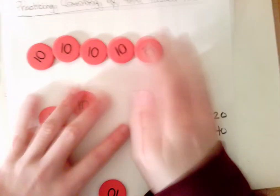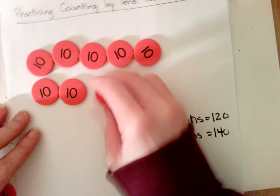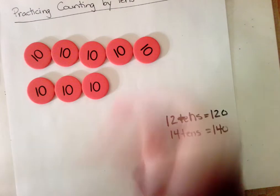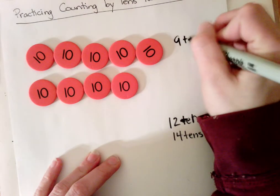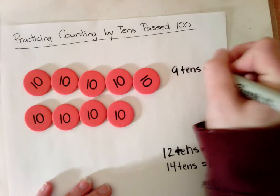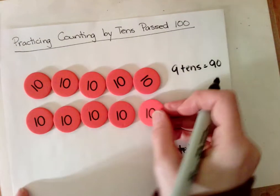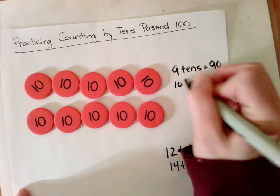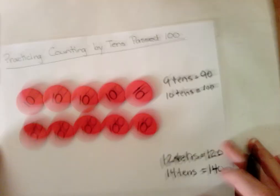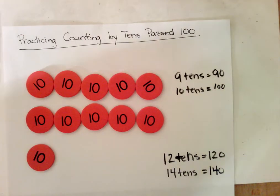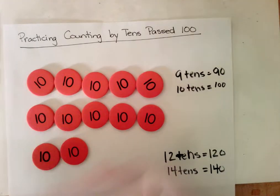Let's count just our 10s starting at 8 tens — the unit form way. 8 tens, 9 tens. Let's stop at 9 tens: 9 tens equals what value? The value is 90. Let's keep going — 9 tens, 10 tens. Stop there: 10 tens has the value of 100. Let's keep going — 11 tens, 12 tens. And now we can stop and say: 12 tens has the value of 120, and so on.